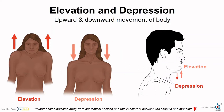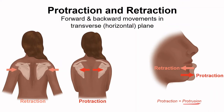In anatomical position your shoulders are depressed but your mandible is elevated or closed. Elevation and depression of the mandible is opening and closing of the mouth, whereas elevation and depression of the scapula is like shrugging your shoulders. Both can also protract (protrusion) or retract, moving forward and backward along a more horizontal plane. We'll come across more special movements and define them as we go into regional anatomy.